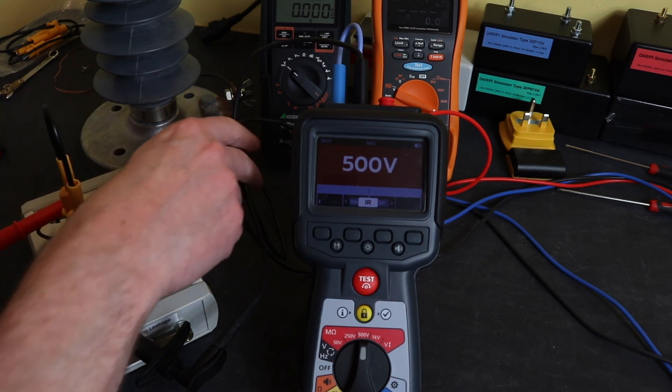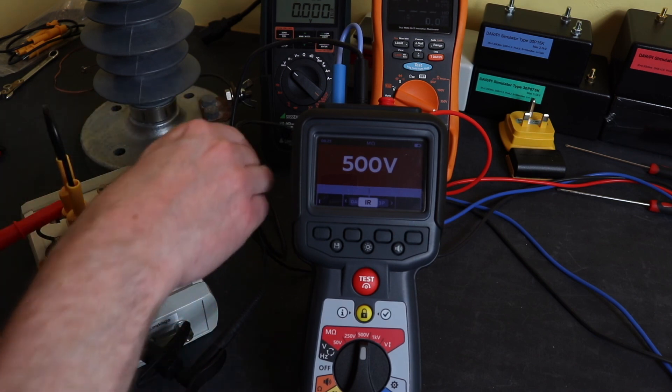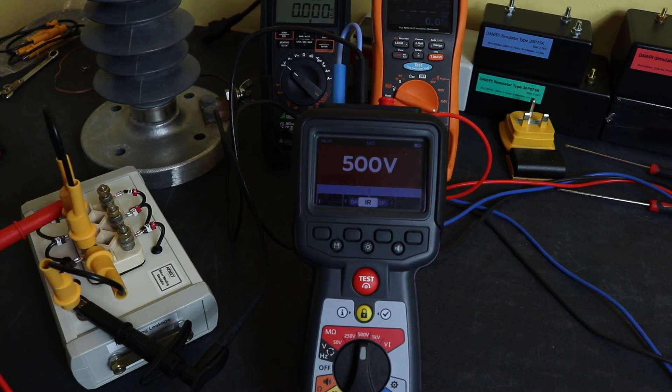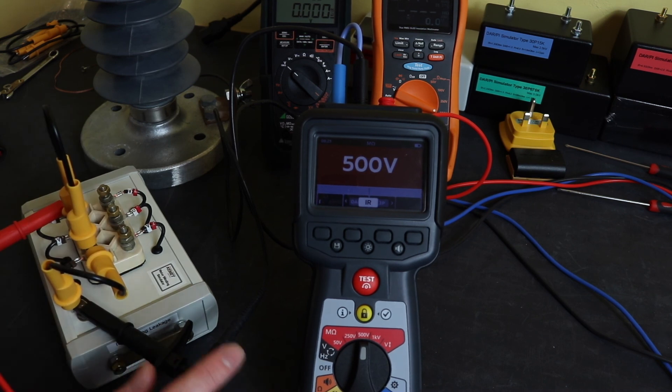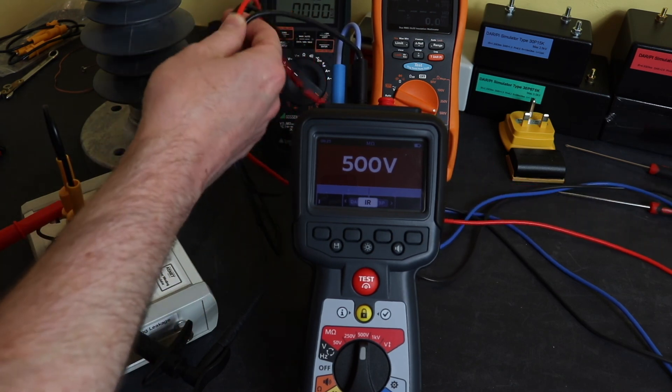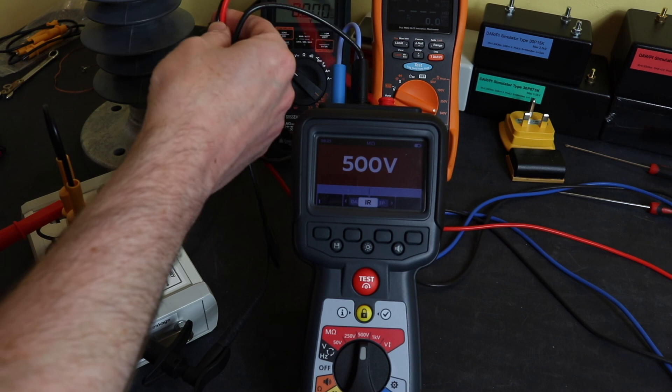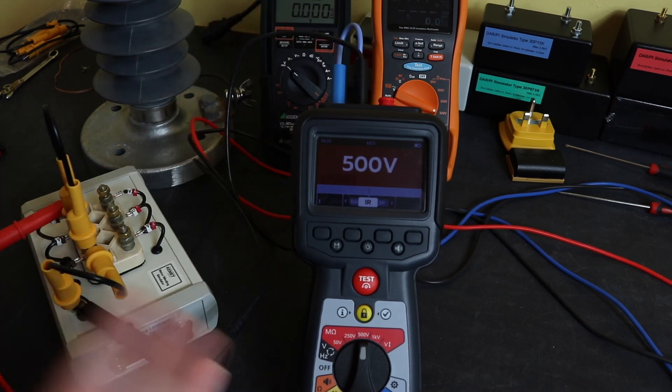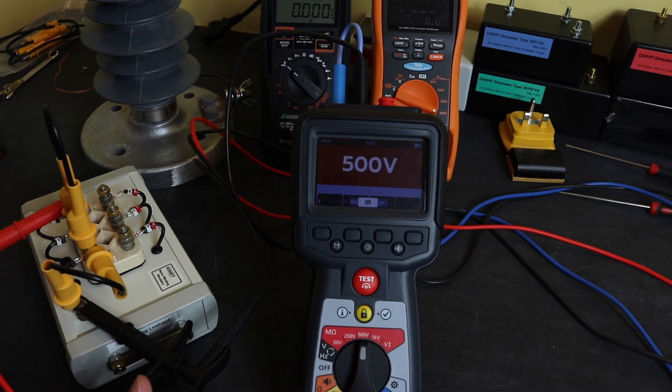That would be the test configuration with a guard terminal. The shielded lead will take away any leakage that goes between the two leads. At 500 volts it's unlikely you'll get much leakage unless the leads are tracked together, damaged, or excessively dirty. You do start to see leakage at around a thousand volts but with good test leads it's not much of an issue.